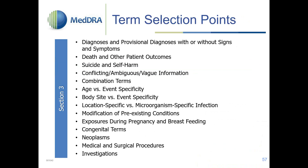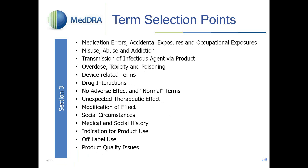The second part of the PTC document addresses specific coding topics: diagnosis and provisional diagnosis with/without signs and symptoms, deaths and other patient outcomes, combination terms, congenital terms, investigation terms, medication errors, accidental exposures, occupational exposures, overdose, drug interactions, off-label use, and modification of effect, among others. Not all will be covered today due to time constraints — many are addressed in the Advanced MEDRA Coding webinar.